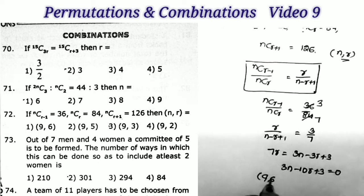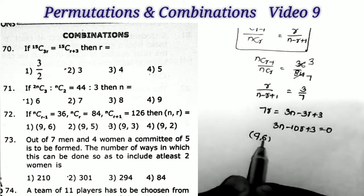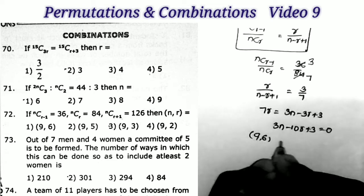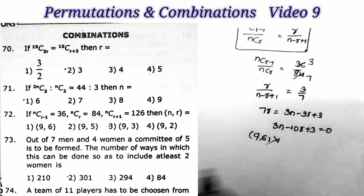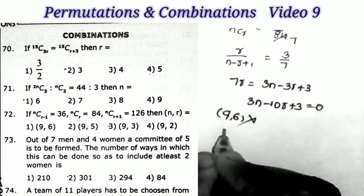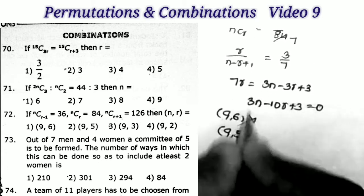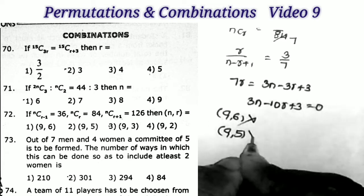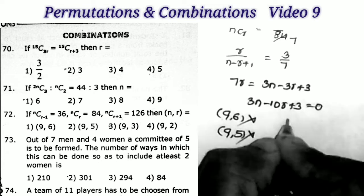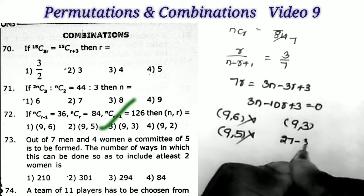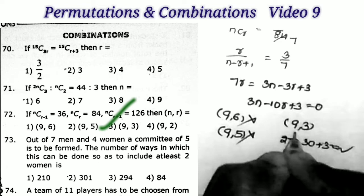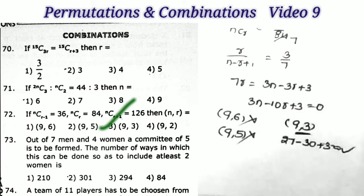First option N=9, R=6: replacing gives 27 − 60 + 3, which is not equal to 0 — not correct. Second option gives 27 − 50 + 15, also not equal to 0. Third option N=9, R=3: gives 27 − 30 + 3 = 0 — this is the correct answer. The answer is the third option, verified.